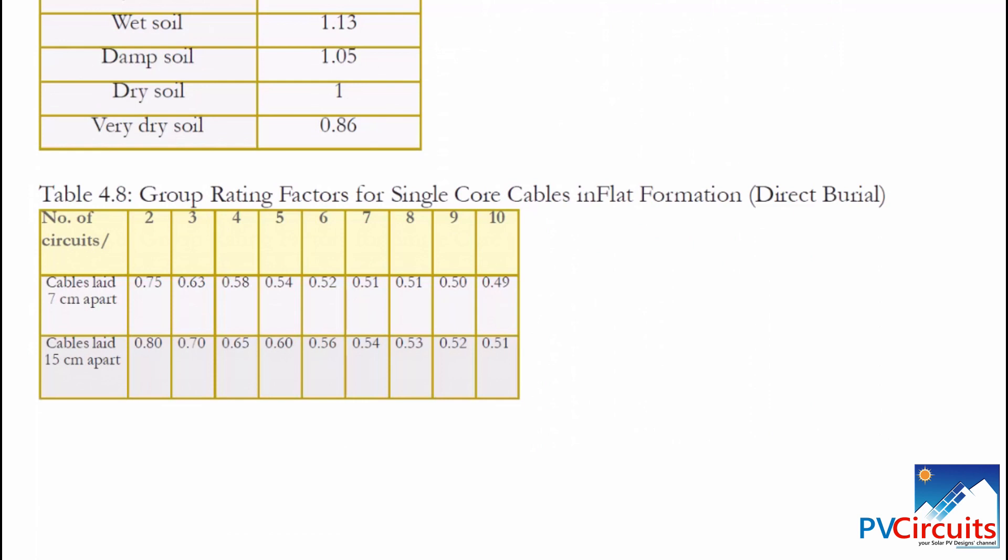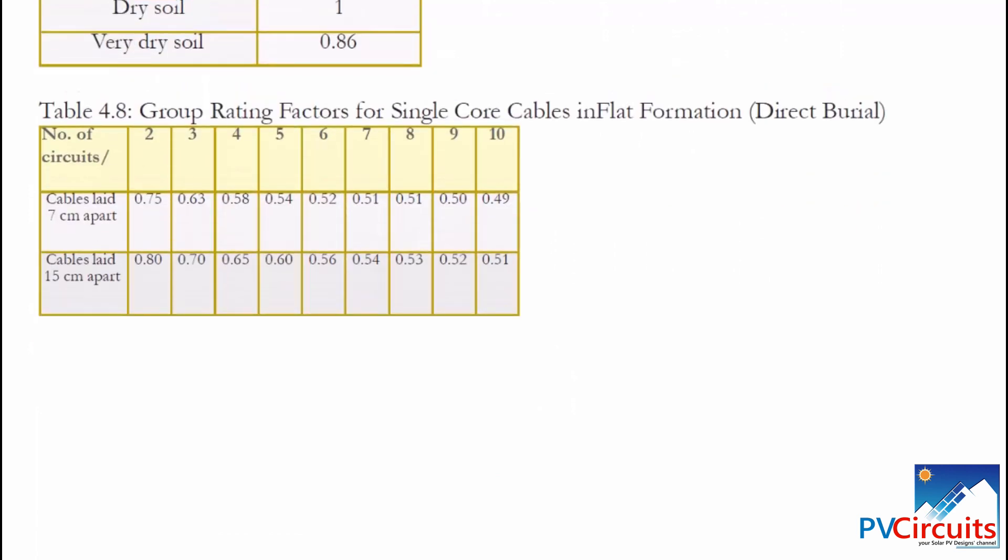Further, we have the grouping factors. Depending on how many cables have been put together, we choose the correct rating factor. In our case, the cable is laid 15 cm apart. And there are two cables. So, we have 0.8. With that, let's go back to our problem.